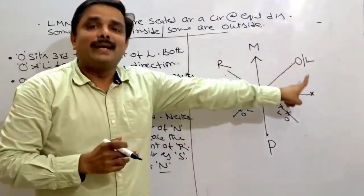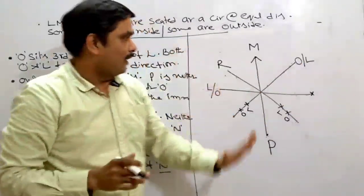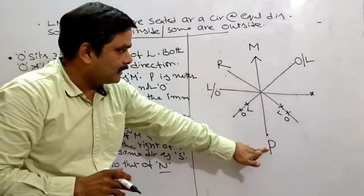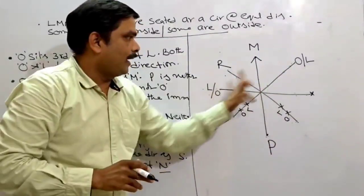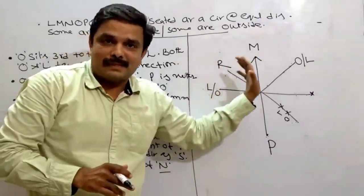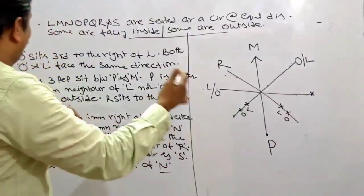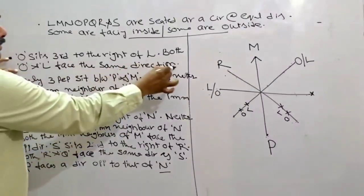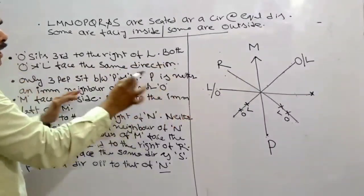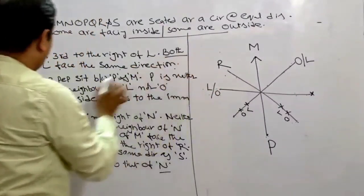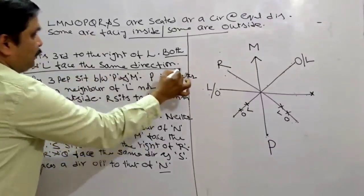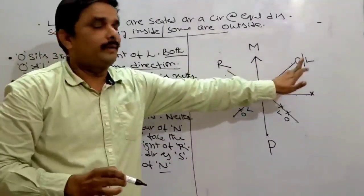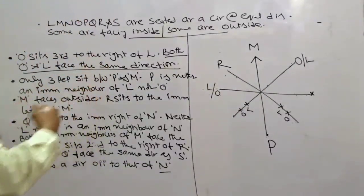Now the elimination is complete. M is confirmed, R is confirmed, P is confirmed, and more or less O and L are confirmed. Now: 'both O and L face the same direction' — I cannot use this yet, keep it aside. We have concluded that L and O occupy those two positions — either L here and O here, or O here and L here.